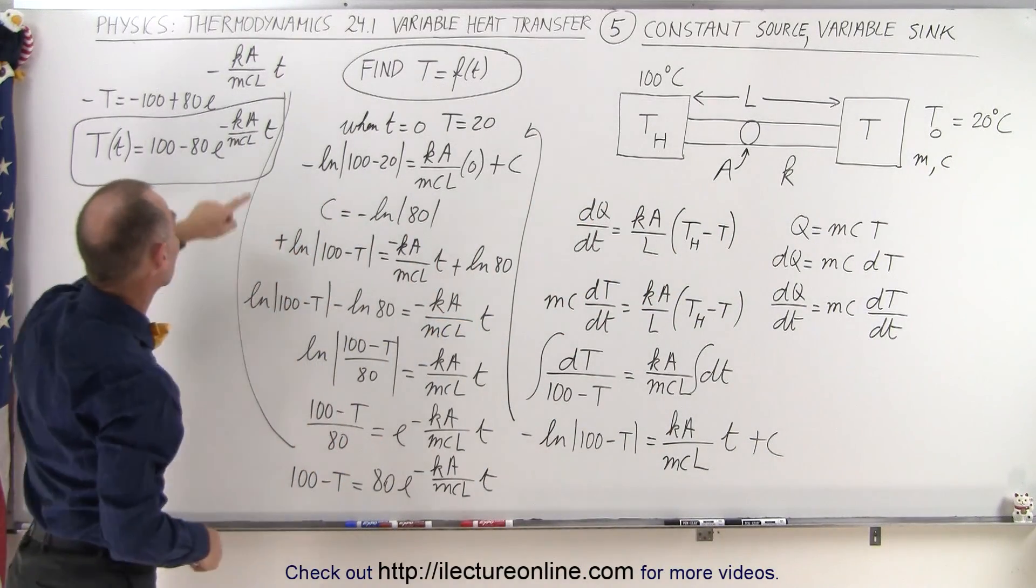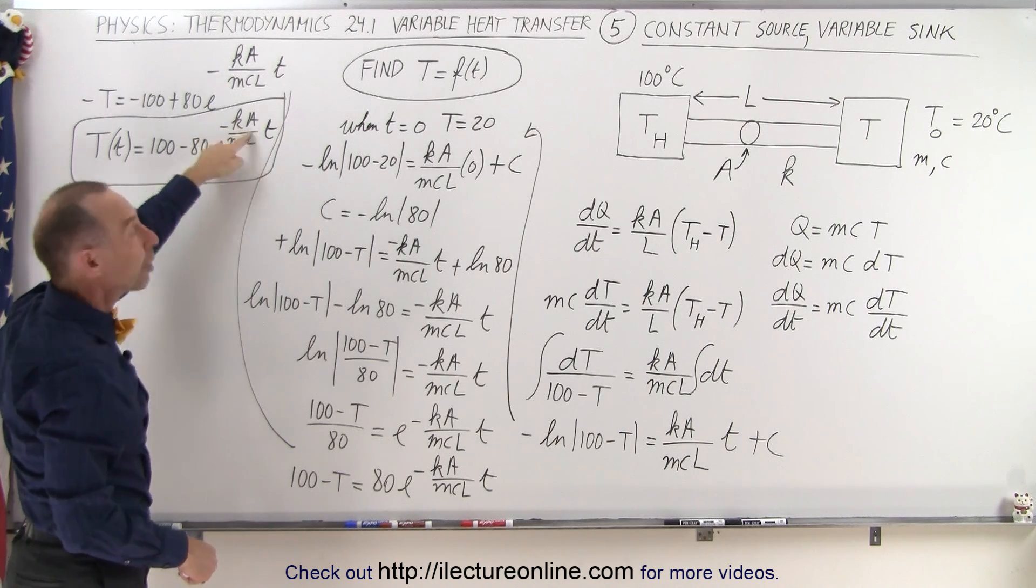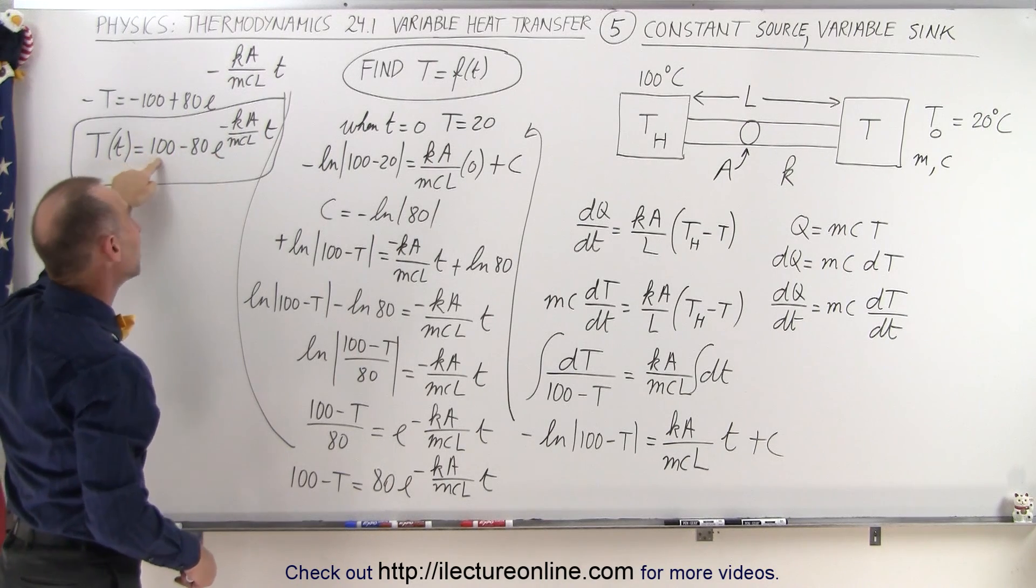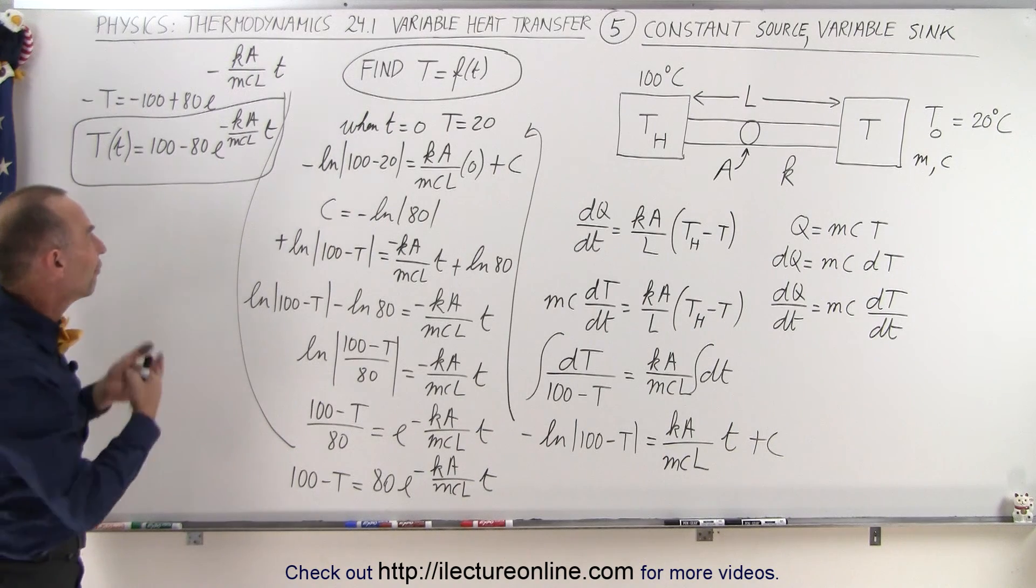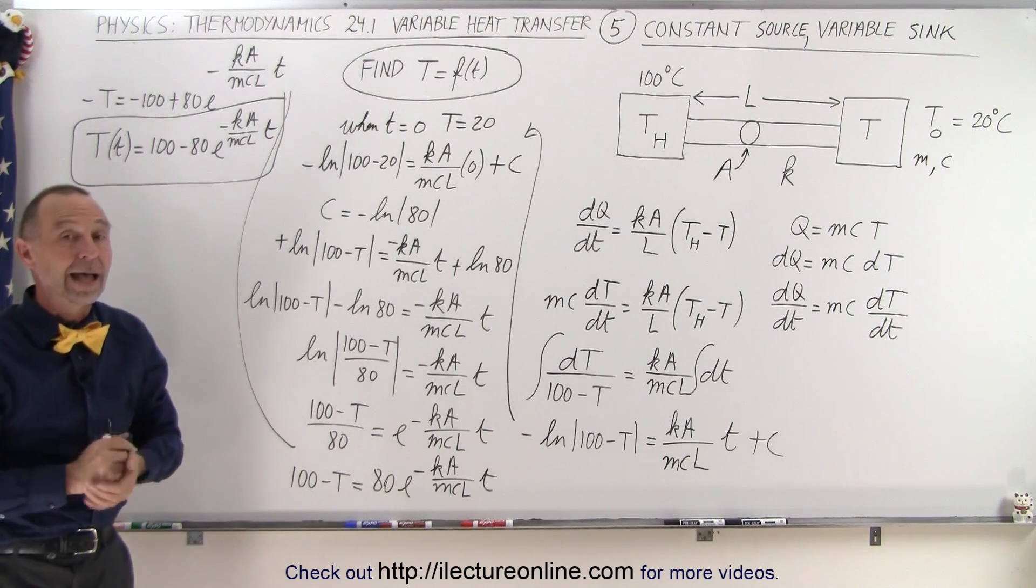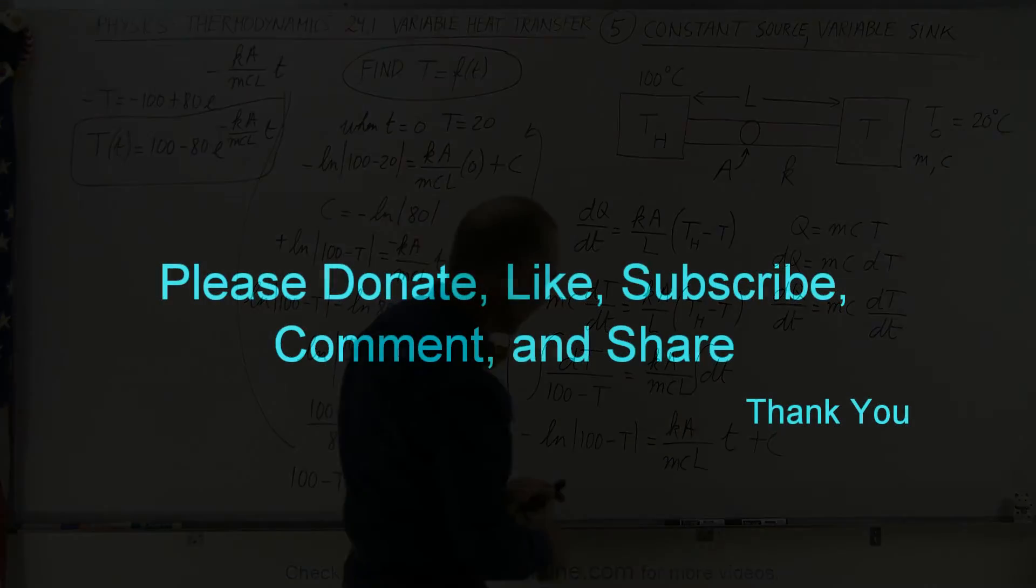What about when T becomes very large? When T becomes very large, E to the negative large number goes to 0, 80 times 0 is 0, the final temperature will be 100 when T becomes very large. We'll calculate various times required to reach certain temperatures in the next video as an example. And that's how it's done. Thank you.